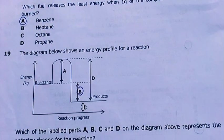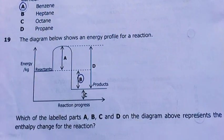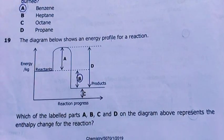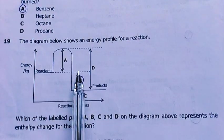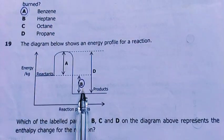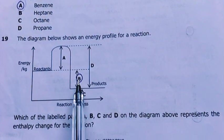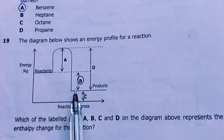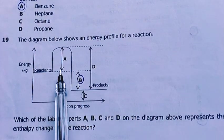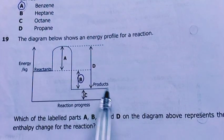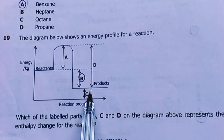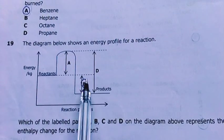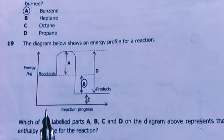Number 19. Diagram below shows an energy profile for a reaction. Which of the labeled parts represents the enthalpy change for the reaction? Reactants to products. This is exothermic because the products are lower in their energy content, meaning the reactants have released part of their internal energy to come at this lower internal energy state, which makes them more stable. My answer is this difference here, which is B.